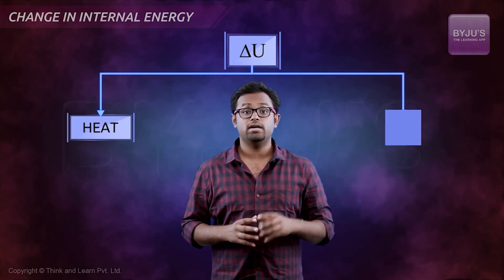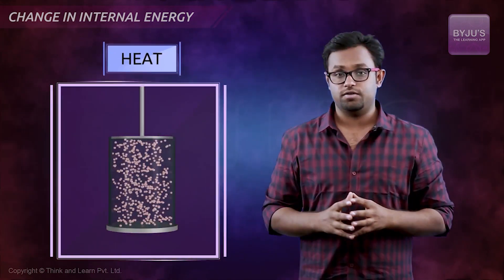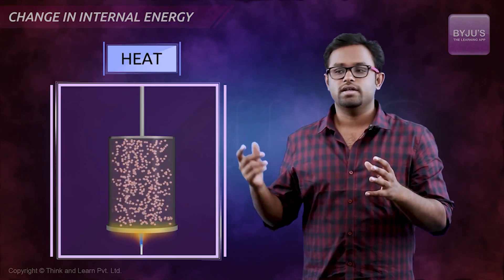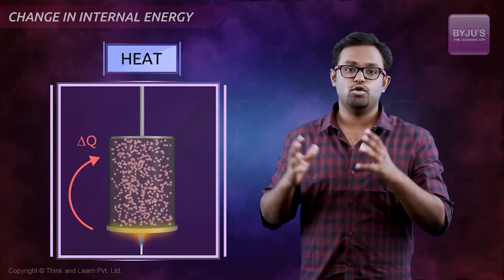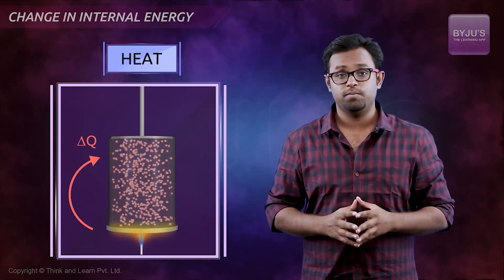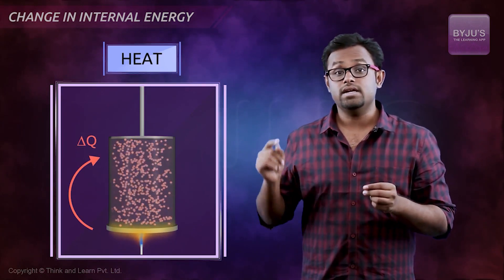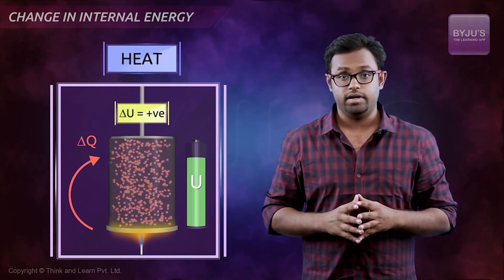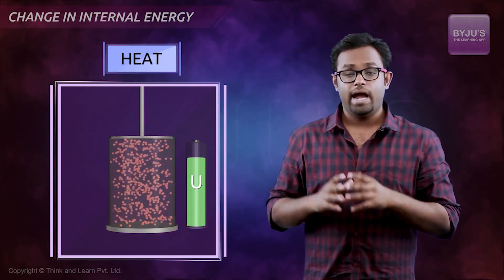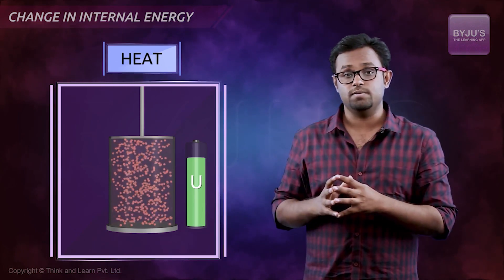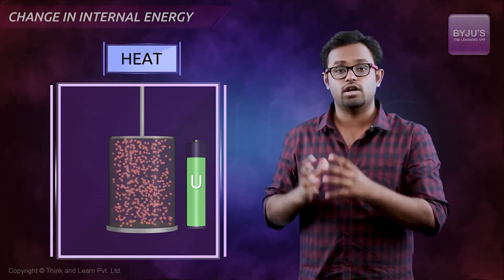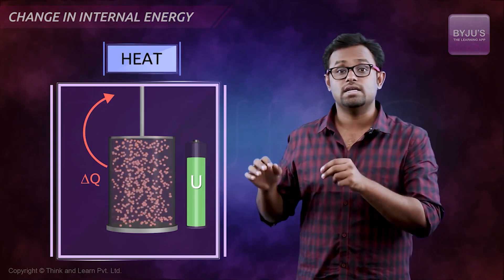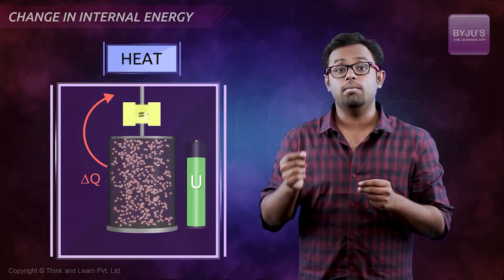Let's talk about heat first. What happens when you heat the system? The temperature of the walls of the system would increase, because of which heat will transfer from the surrounding to the system, and the system will gain energy — the internal energy delta U will be a positive quantity. And if the system is at a higher temperature than the surrounding, then heat will go from the system to the surrounding, the system would lose energy, and the internal energy would come down.